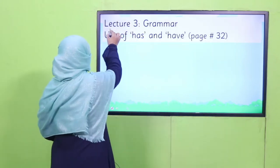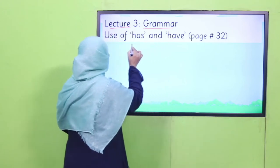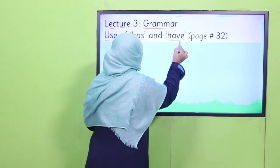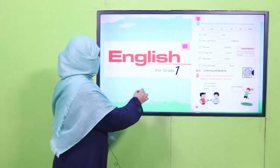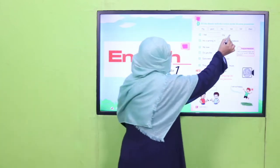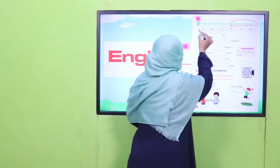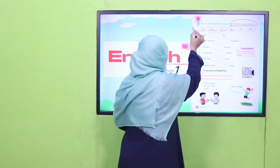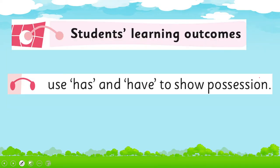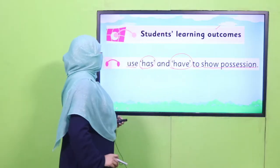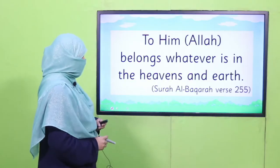Today is lecture 3. Under the title of grammar, we learn to use has and have, and we'll cover page number 32 of your book. Previously, in grade 1, I have taught you about words showing possession — my, your, his, her. I hope you remember; if not, you may watch this video again. So, we'll learn further and we'll cover the SLO to use has and have to show possession. This is our today's SLO. Let's start with the name of Allah, subhanahu wa ta'ala.